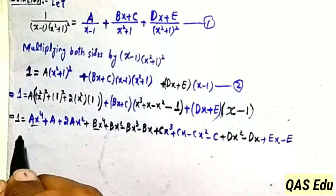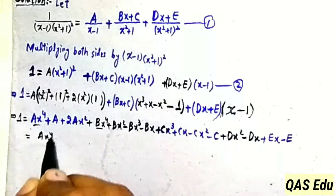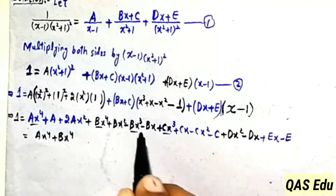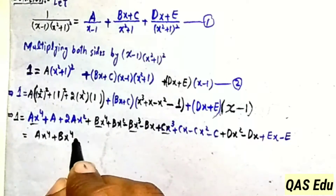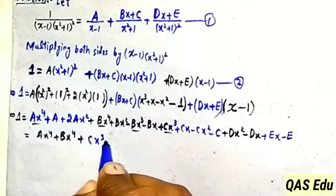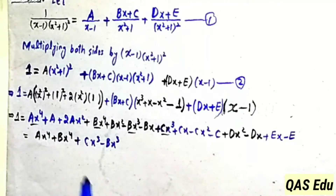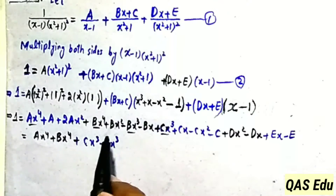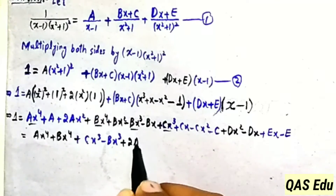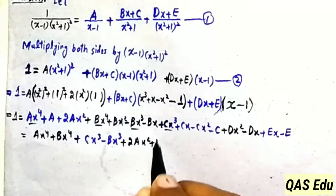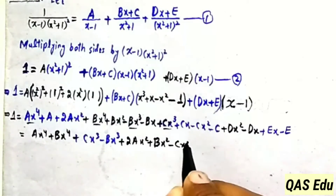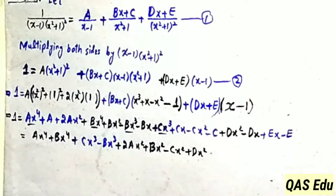Collecting x power 4 terms: A x power 4 plus B x power 4. Collecting x cube terms: minus Bx cube plus Cx cube. Collecting x square terms: 2A x square plus B x square minus C x square plus D x square, written as 2A plus B plus D minus C x square.